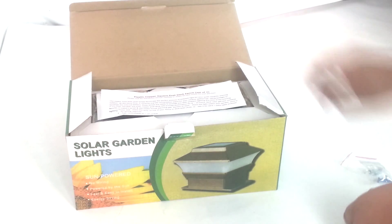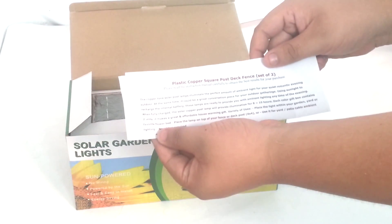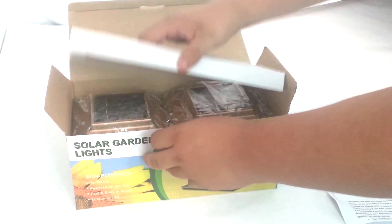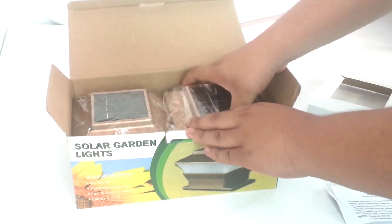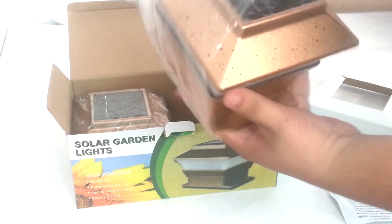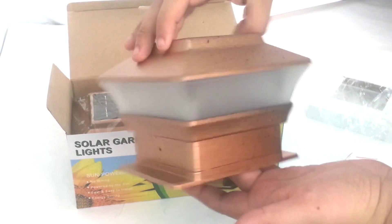Inside the box is two pairs of mounting screws, one user manual, and lastly two copper solar post lights.